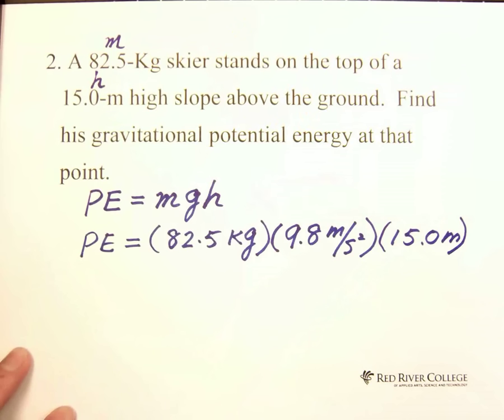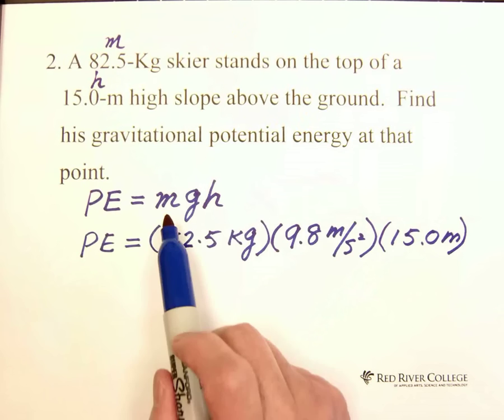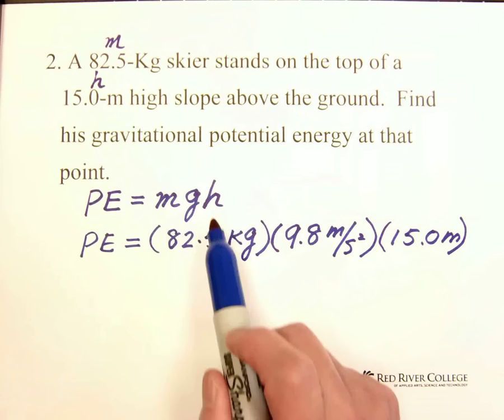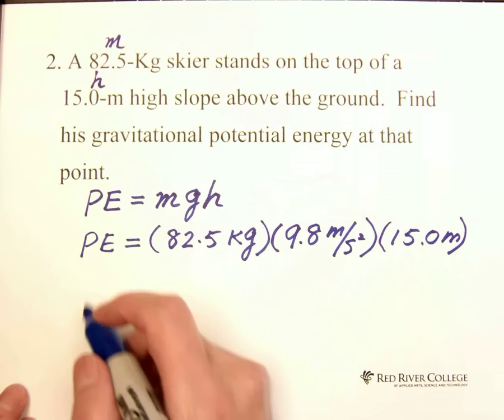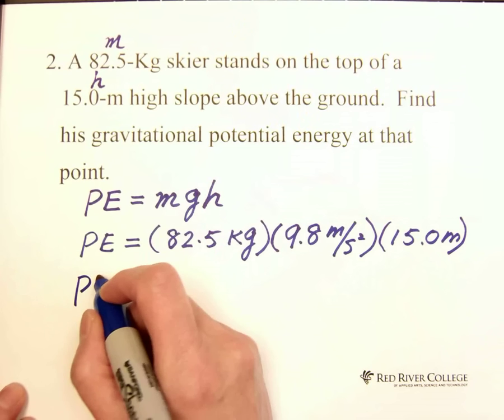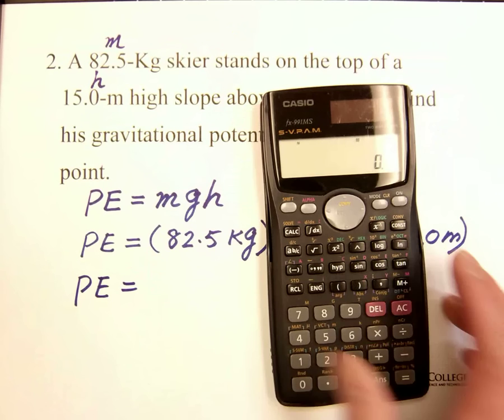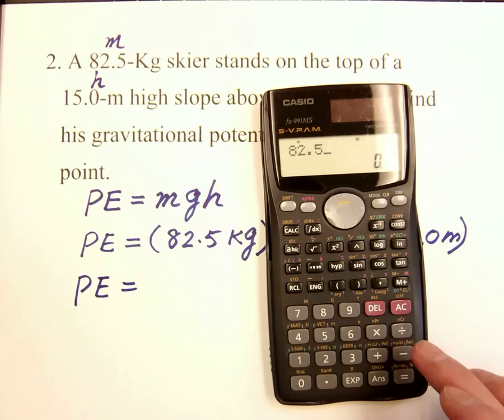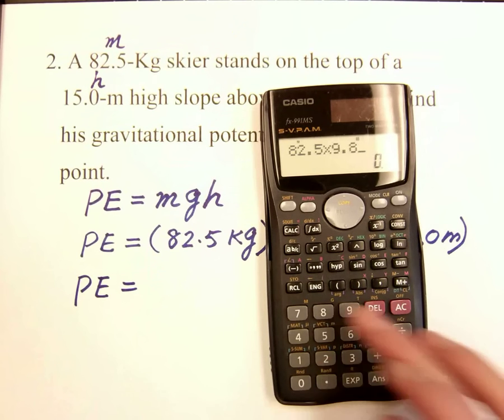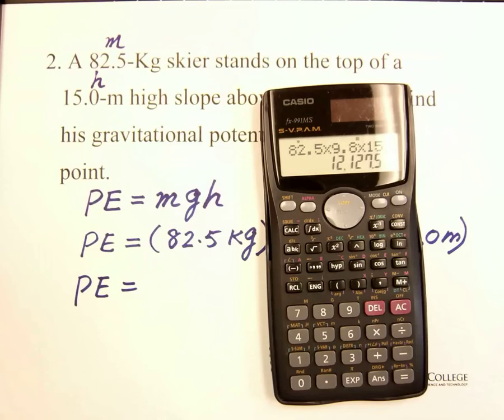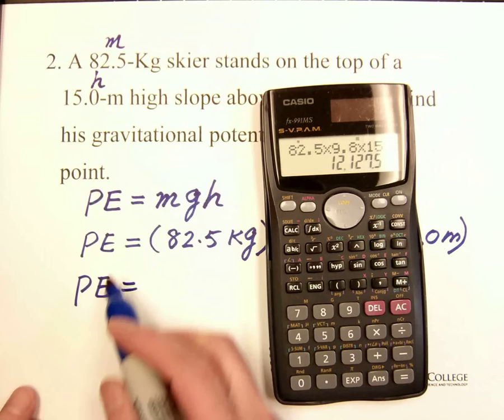Make sure before you plug number into the formula, make sure mass is kilogram, G is meter per second squared, H is meter. Then we can calculate the potential energy. 82.5 times 9.8 times H is 15. We got 12,127.5.